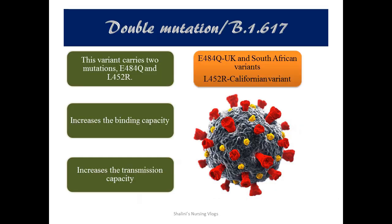The double mutation, B.1.617, is now believed to cause the second wave. In almost 61% of the samples, we have detected the double mutated strain. The E484Q variant, earlier declared by the UK and South Africa, and the Californian strain L452R — a combination of these is what produces the double mutated strain. This acts over the spike protein, increasing both the binding capacity and the transmission capacity of the virus.